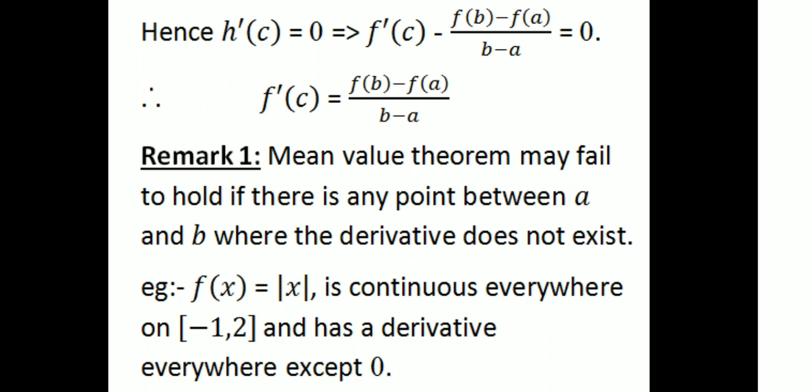The continuously differentiable property is important. At least at one point, the derivative must exist. For example, consider f(x) = |x|.